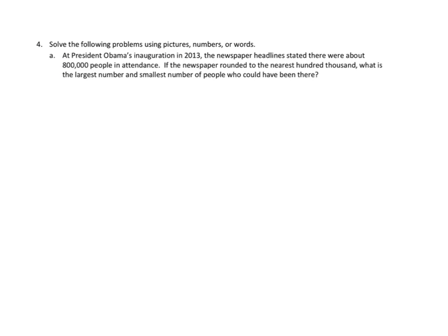Our last problem asks us to solve the following problems using pictures, numbers, or words. The one we're going to do is 4A. At President Obama's inauguration in 2013, the newspaper headline stated there were about 800,000 people in attendance. If the newspaper rounded to the nearest 100,000, what is the largest number and smallest number of people who could have been there?